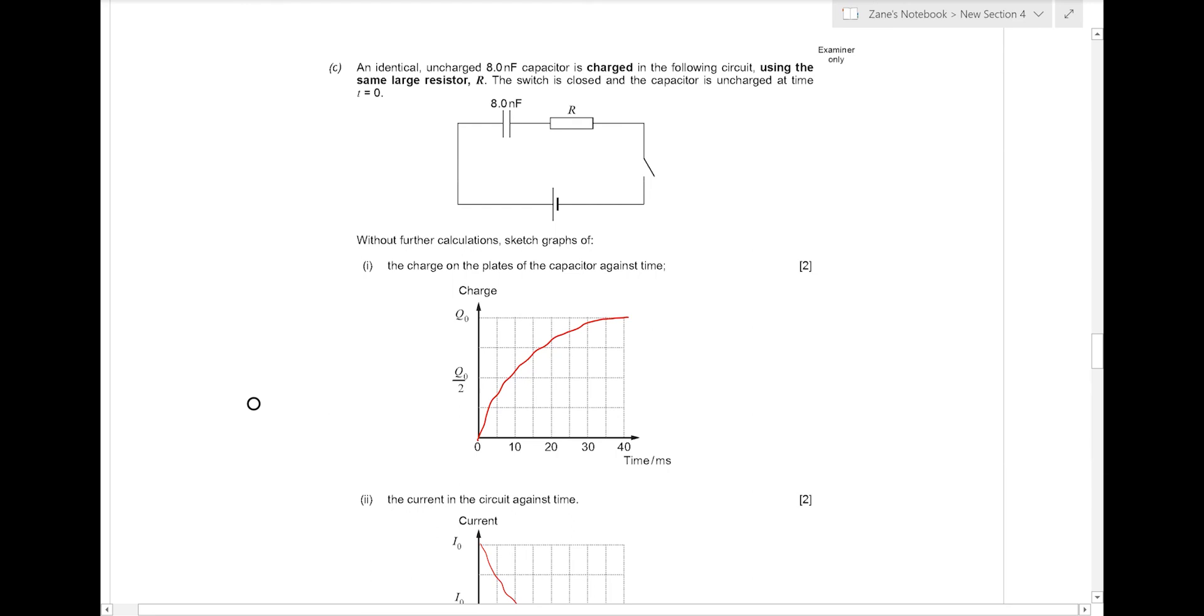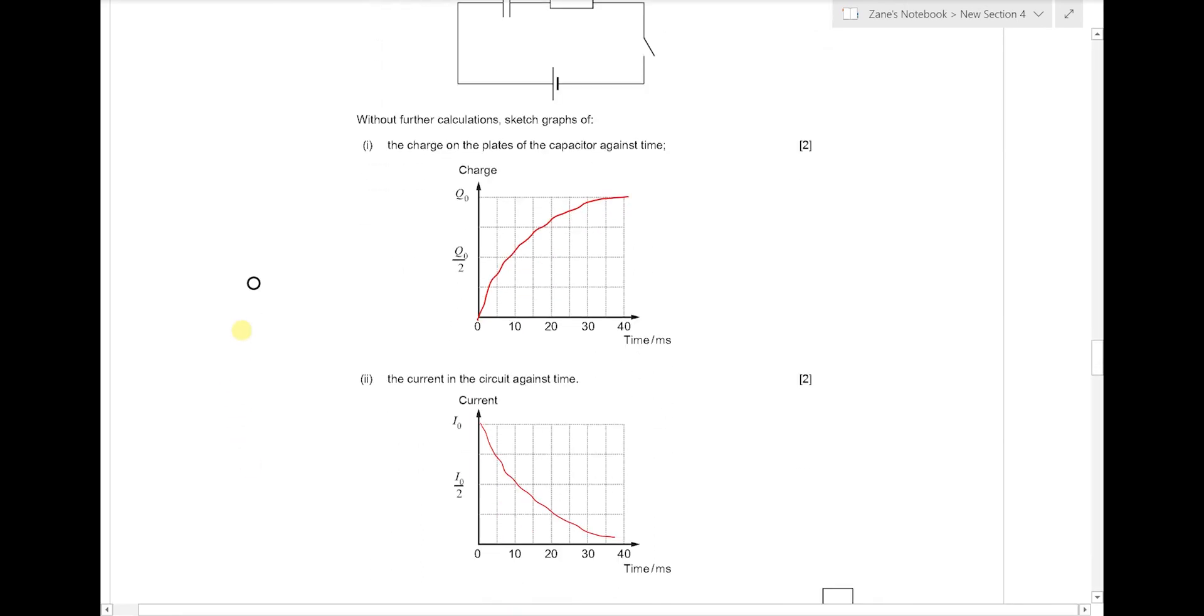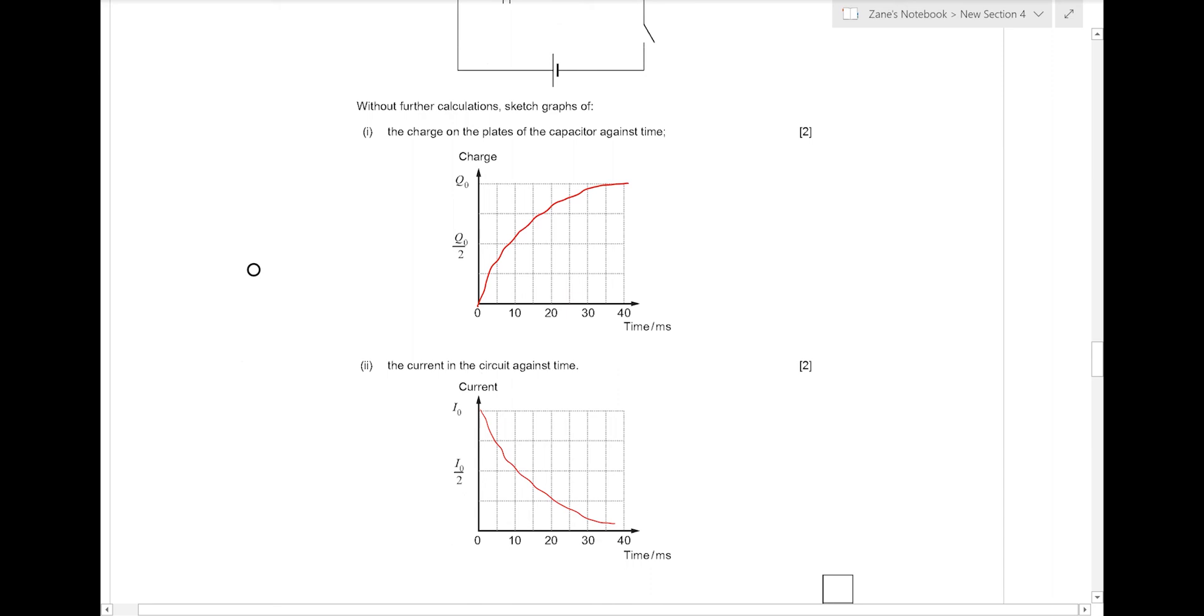For part C of the question, one of those 8 nF capacitors, which is initially uncharged, is charged using the circuit given, using the same resistor from earlier. In other words, the time constant is still 15.5 ms. We have to sketch graphs of the charge on the plates of the capacitor against time. To do so, we can use the charging formula which is provided in the data booklet, where Q equals Q0, 1 minus E to the minus T over RC.